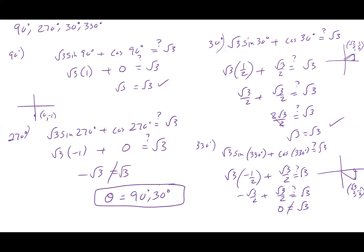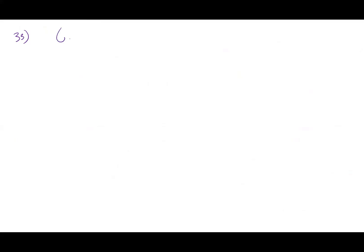And we have problem number 33. This one involves using the calculator to check. The problem is: six cosine theta plus seven tangent theta equals secant theta, for theta from zero degrees up to but not including 360 degrees. We have three different trig functions, but the base ones we normally work with are sine and cosine. So anytime you see tangent, secant, cosecant, or cotangent, you probably want to change everything in terms of sine and cosine — that gives us the easiest way to solve.